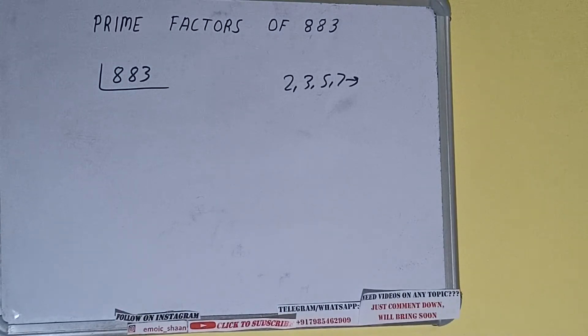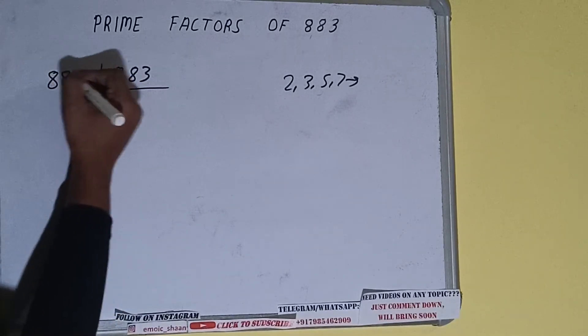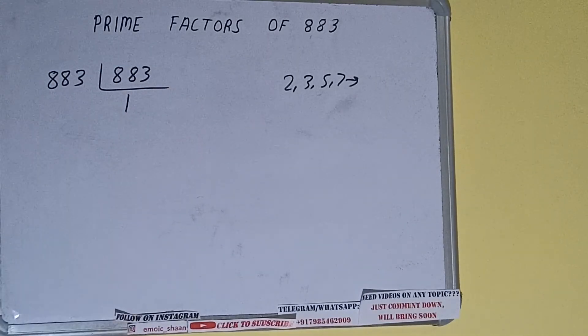So if we talk about the number 883, the number 883 is also a prime number. So it is only divisible by itself, that is 883, and once we do so we'll be getting 1.